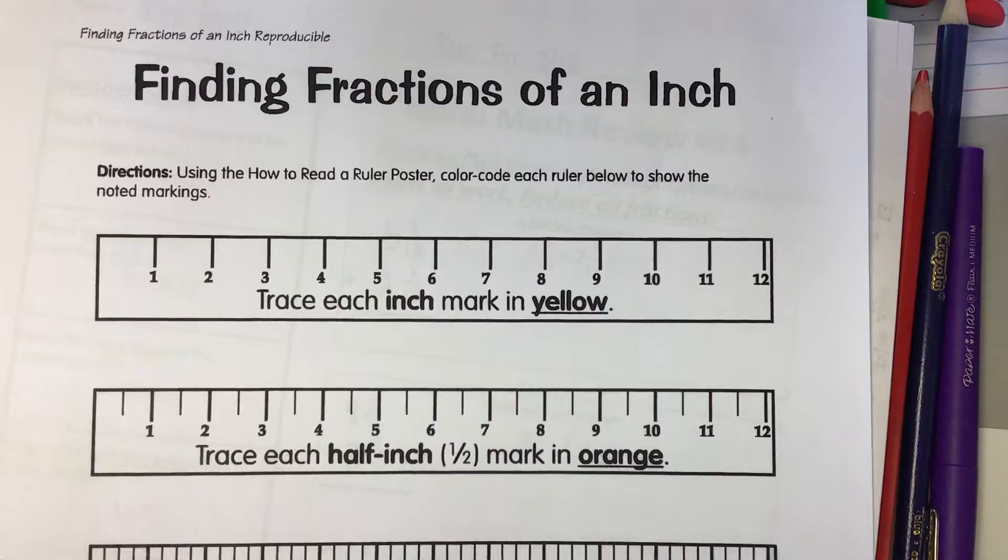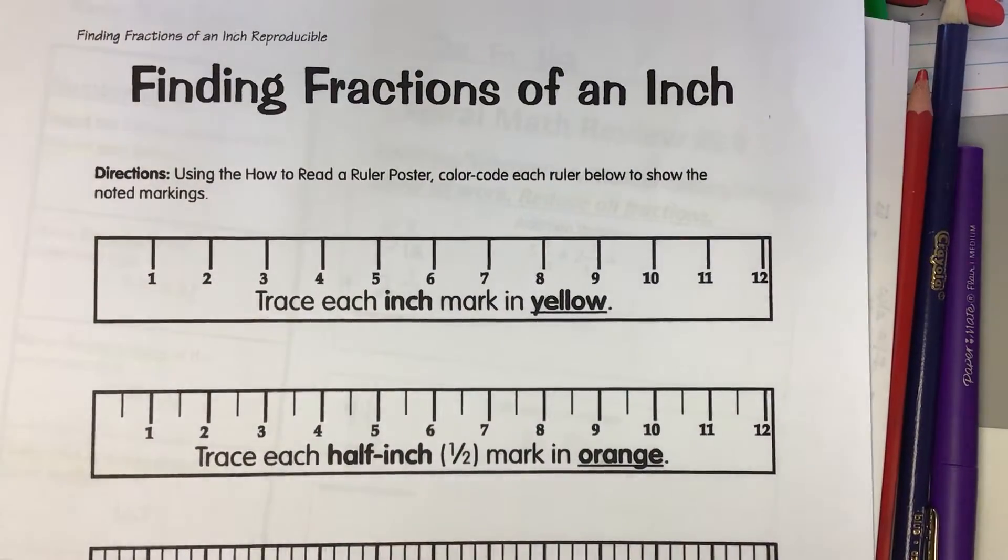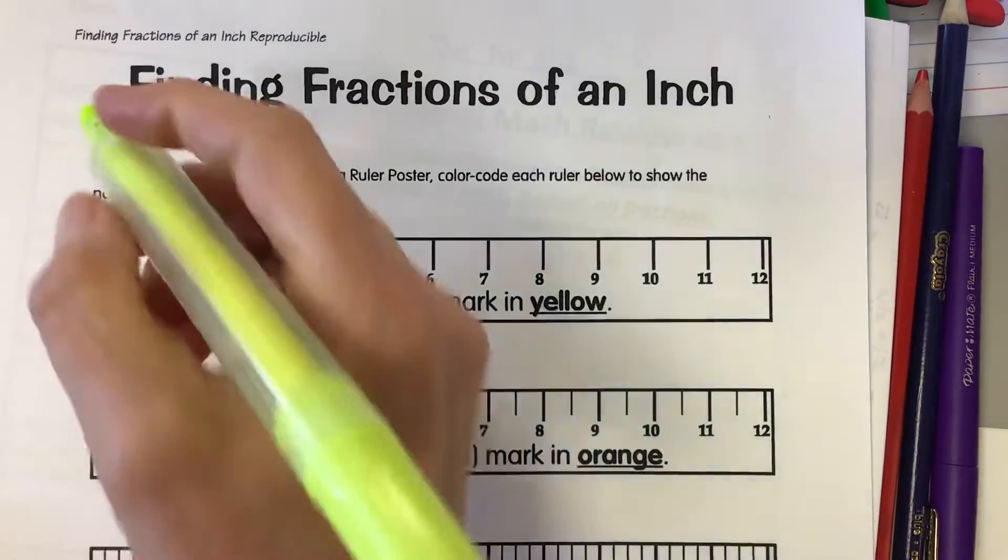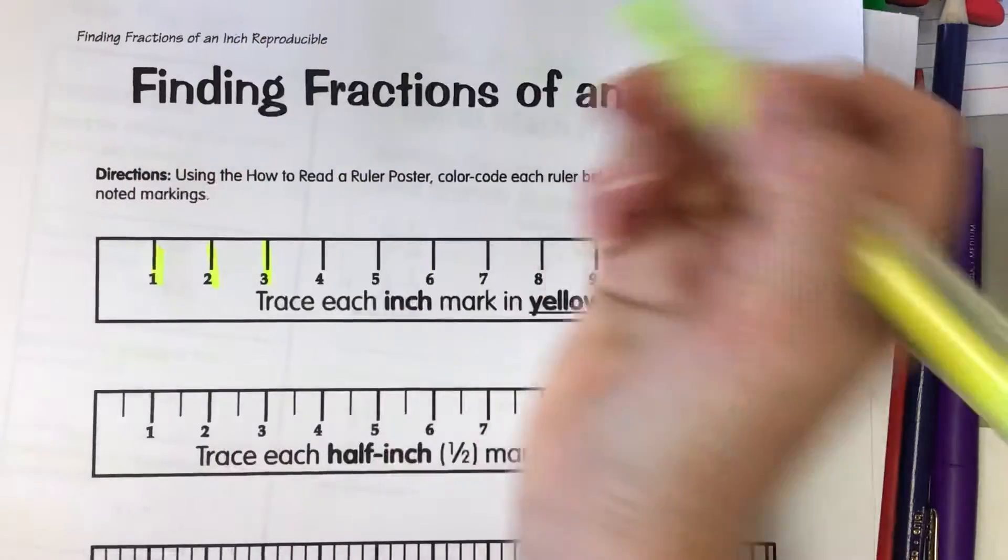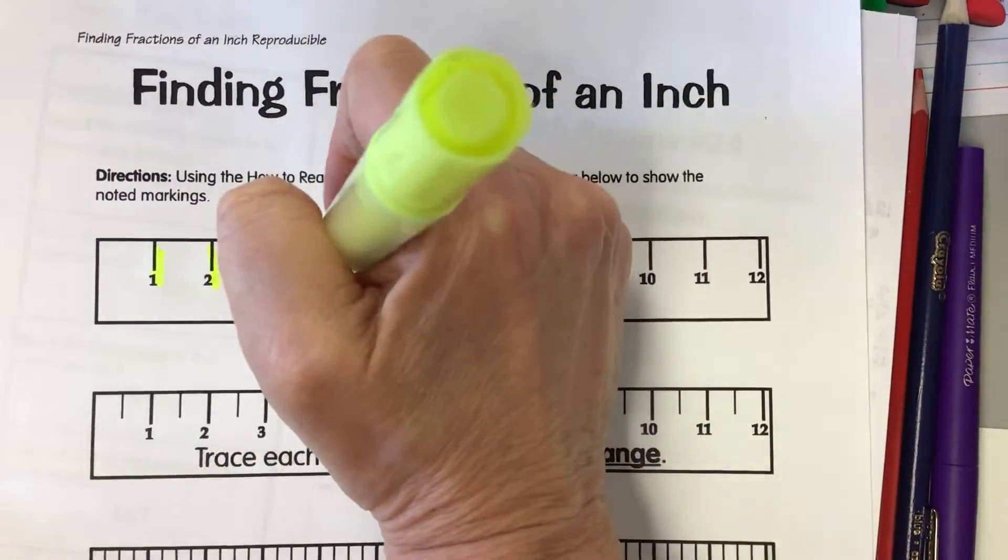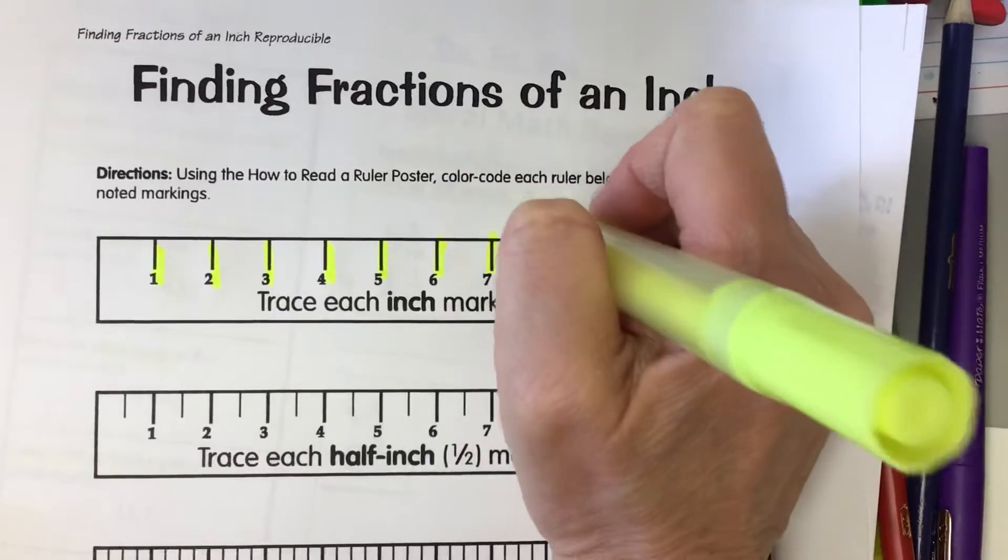Okay, so this first ruler is just divided into inches. So these are inch marks and you're supposed to trace each of those inch marks with a yellow highlighter, marker, colored pencil, crayon, what have you.